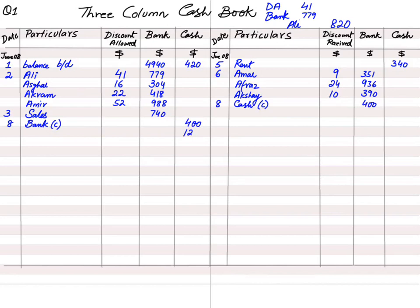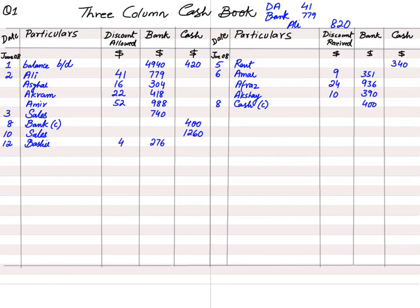On the 10th of June: cash sale of 1260 — cash is debited, reference 'Sales.' Next, Basheer paid his account of 280 by check less 4 dollars cash discount (the discount amount is already given, not a percentage). Discount allowed is 4 dollars on the debit side; the bank receipt is 280 − 4 = 276. On the 14th, wages were paid by cash — cash is credited.